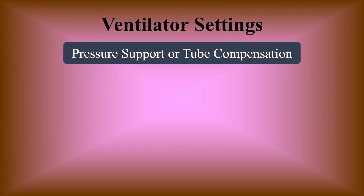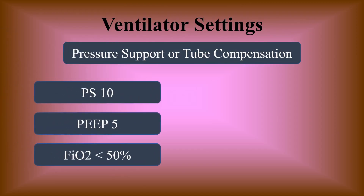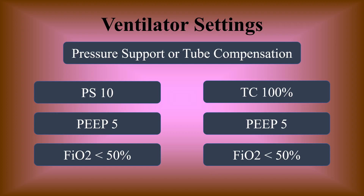If they pass, you can start the spontaneous breathing trial on pressure support or tube compensation. For pressure support, you can do 10 over 5 or 5 over 5, making sure they're already on a lower FiO2. Tube comp always needs to be at 100% — that compensates for the resistance of the tube. You want PEEP at 5 and FiO2 less than 50%. Pressure support versus tube comp really depends on your institution, since tube compensation is more representative of how they'll breathe without an ET tube. Follow your hospital's policies and procedures.